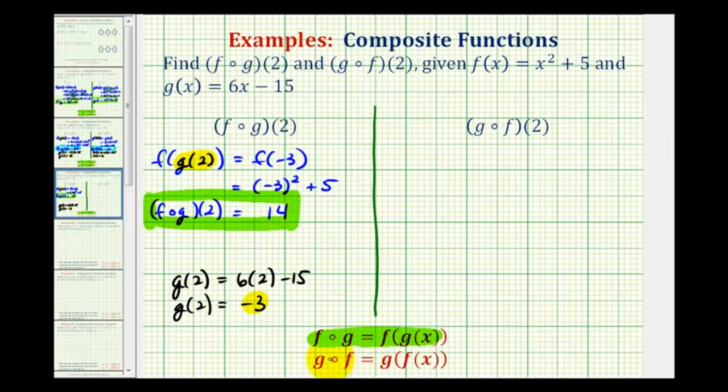And since g of f is equal to g of f of x, we can rewrite this as g of f of 2. Notice how when using this different notation, the order of g and f stay the same. And now, starting with the innermost function value, we'll determine f of 2 first.